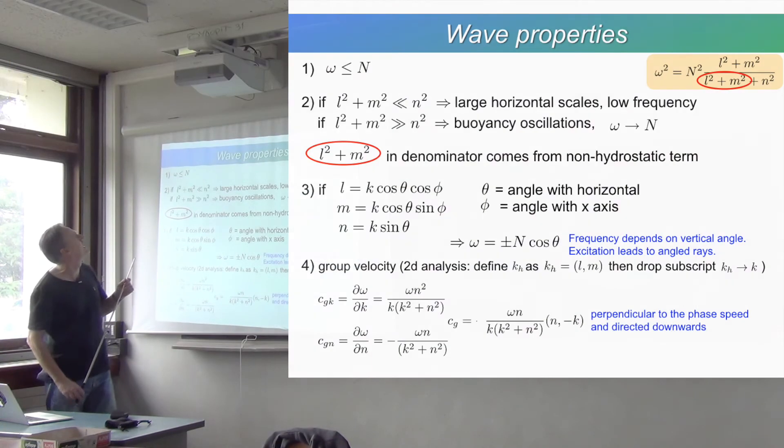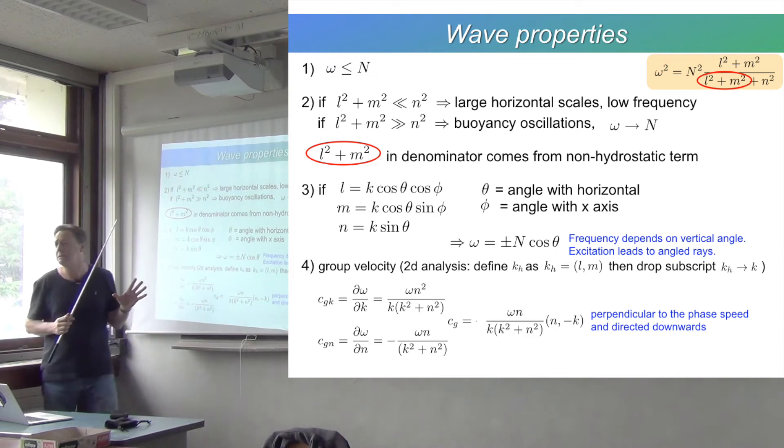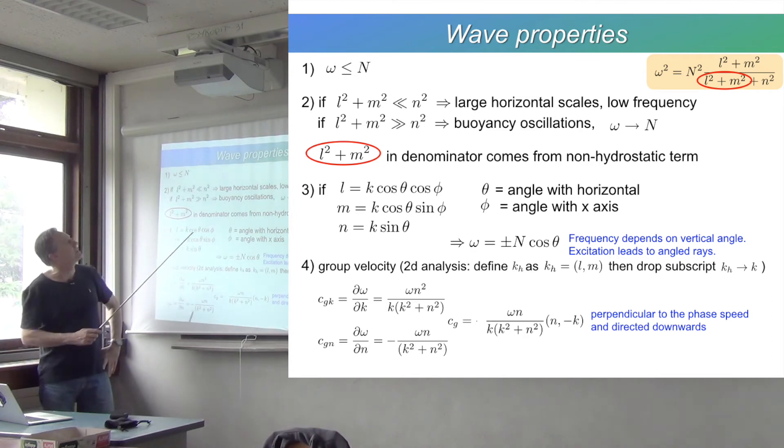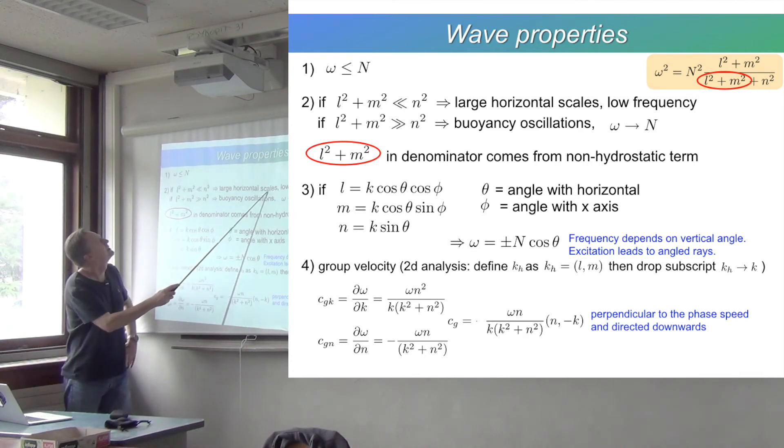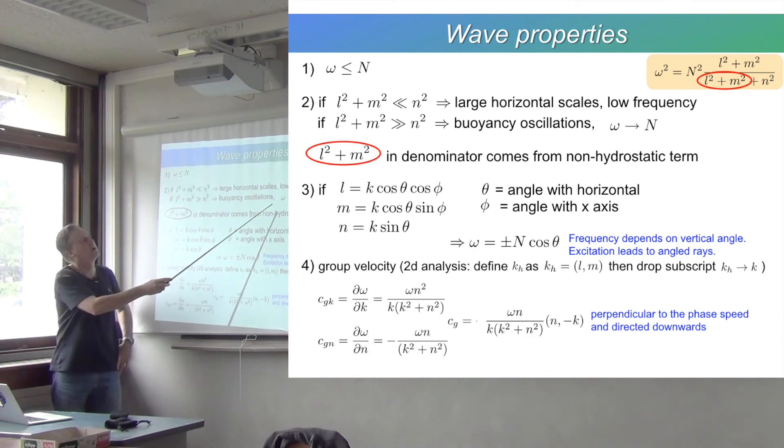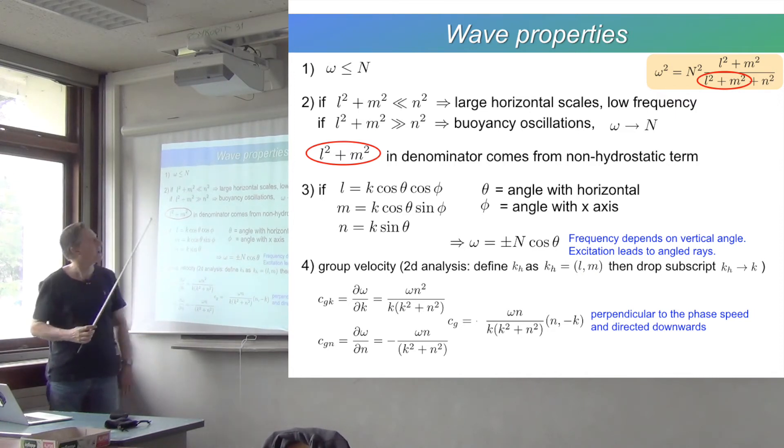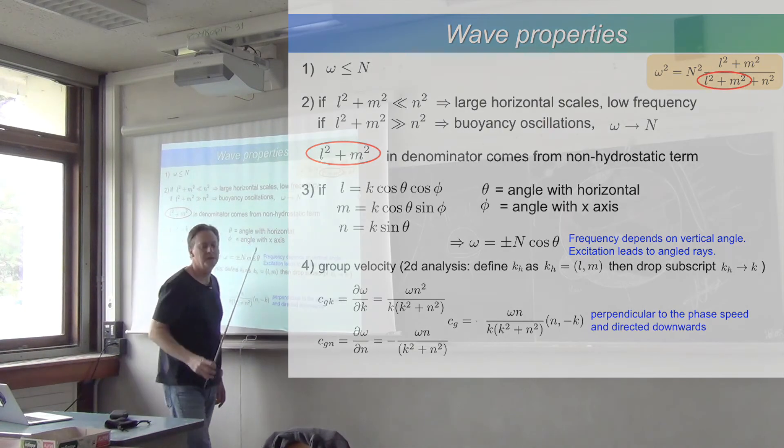If you have this term here, then you can have large vertical scales, so small values of n, and the frequency will not go to infinity, it will go to n because you'll have the same thing on the top and the bottom here. Let's just recap that. The frequency is lower than or equal to n, so the maximum value of the frequency you can have in this non-hydrostatic case is n, the Brunt-Väisälä frequency. This denominator, as I said, comes from a non-hydrostatic term.